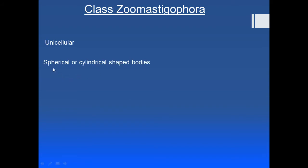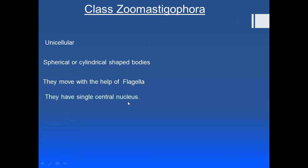Unlike the previous class, which had an undefined shape, these organisms have either a cylindrical or spherical body. Third, they move with the help of flagella — they are also called zooflagellates or class Flagellata. Fourth, they have a single central nucleus, unlike some other classes that may have four nuclei.